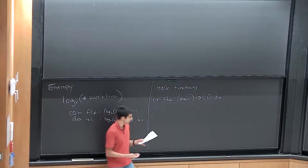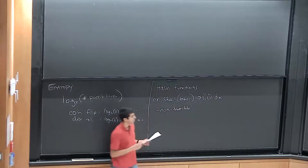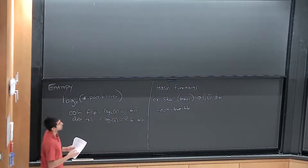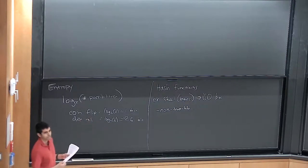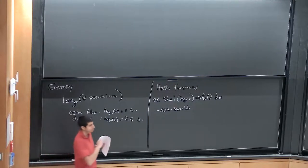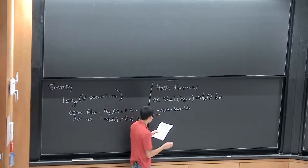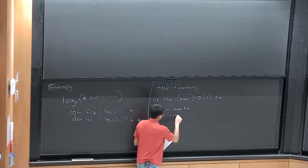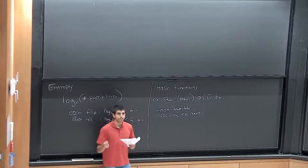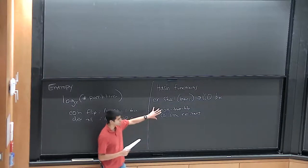Cryptographic hash functions have two important properties. First, they're non-invertible: given the output, it's hard to figure out what input produced it — you can compute the SHA-1 hash easily, but you can't go backwards. Second, they're collision-resistant: it's hard to find two different inputs that produce the same output. These two properties define what a cryptographic hash function is.